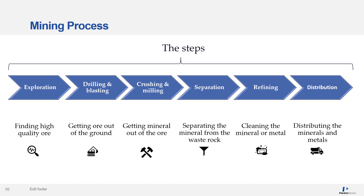All mining operations start with exploration — the process of finding high-quality ore rich in minerals. Once that step is complete, a decision on what to mine at the site can be made depending on the findings, including the types of minerals found and their location in the Earth's crust. These findings will also determine what mining techniques and processes are used. In general, drilling and blasting are used to get the ore out of the ground, followed by crushing and milling to get the mineral out of the ore, and then a separation step to separate the mineral from the waste rock. Separated minerals undergo further refining treatments to clean the minerals and metals, and once purified, metals and minerals are distributed for various applications.